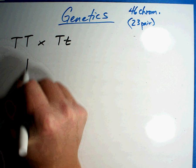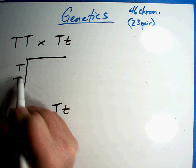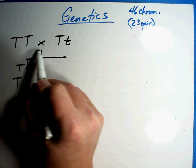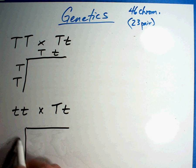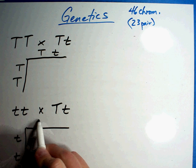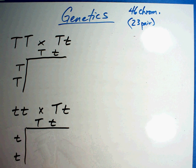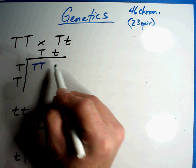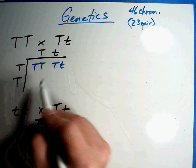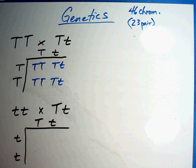All right. If you're going to put these together, you're going to get big T, big T, big T, little t on one side, and little t, little t, big T, little t on the other. The offspring that would occur from this are: big T big T, big T little t, big T big T, and big T little t. There's our first Punnett square — check your work and see how you did.